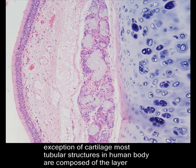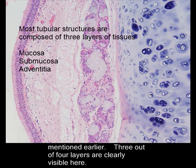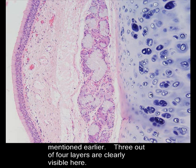With the exception of cartilage, most tubular structures in the human body are composed of the layers mentioned earlier. Three out of four layers are clearly visible here.